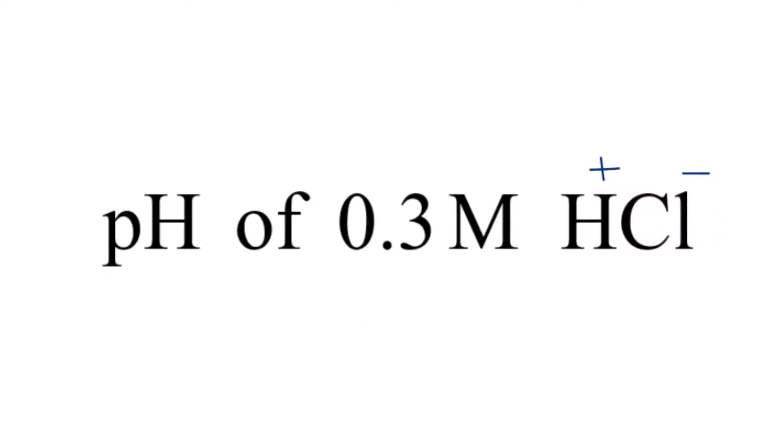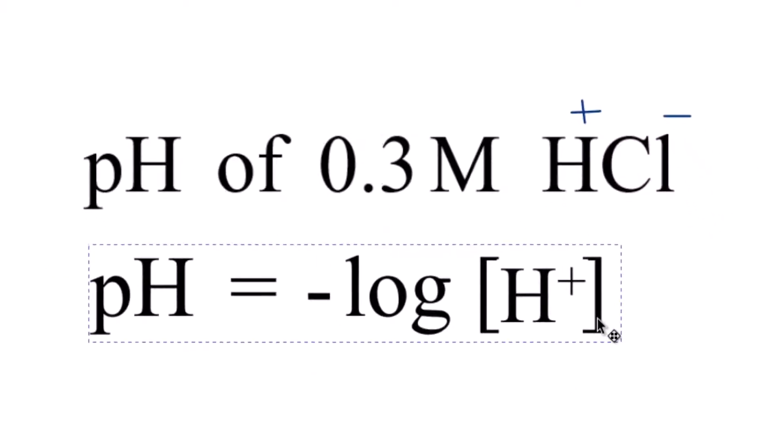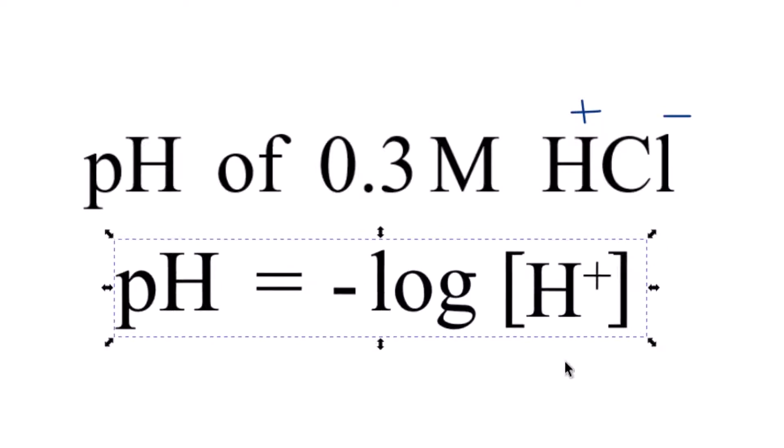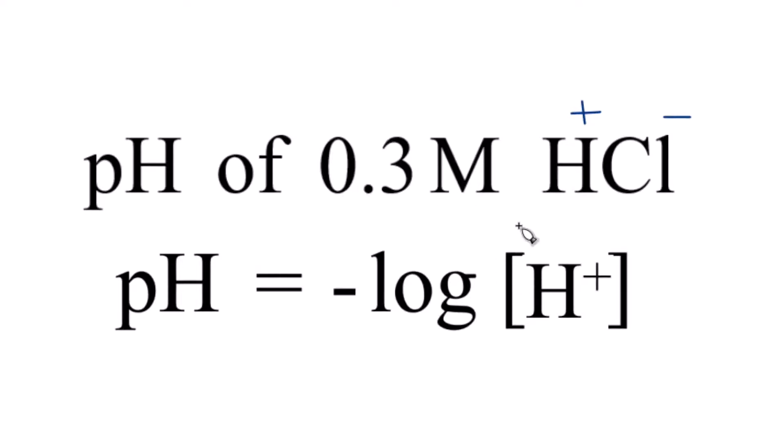So when we're trying to find the pH of something like this 0.3 molar solution of HCl, we'll use this equation. pH is the negative log of the H plus concentration. And here's our H plus right here. So all we need to do is take the negative log of 0.3.